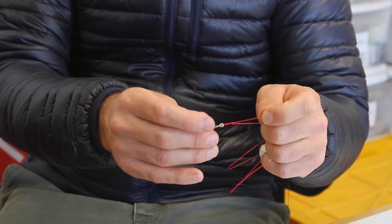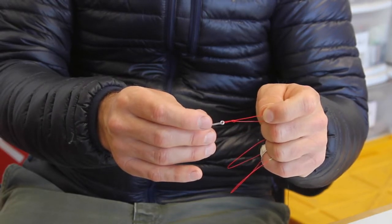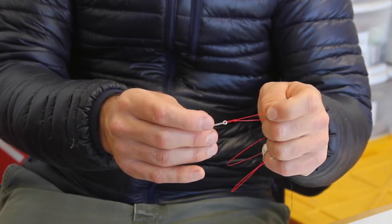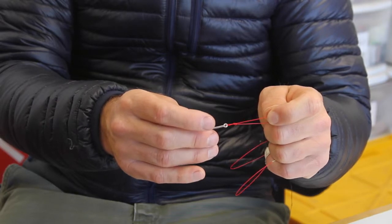It's here that we're going to determine the size loop we want to have to our hook eye. I like loops a little bit smaller because it causes fewer problems when casting.